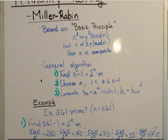The general algorithm for using this method is to first find n minus 1 such that it equals 2 to the k times m, second to choose a which is greater than 1 but less than n minus 1, and third to compute b naught equals a to the m mod n, and then from there bi equals bi minus 1 squared mod n, but I'll explain what that actually means in the example.